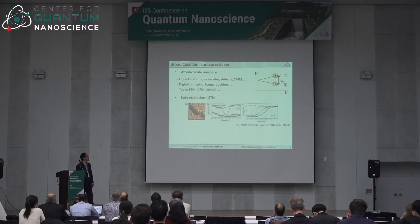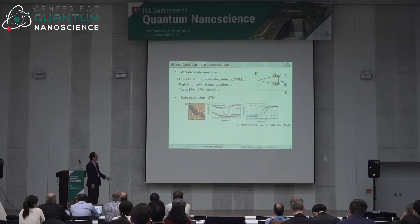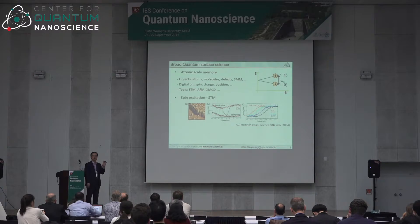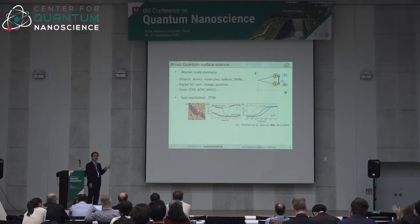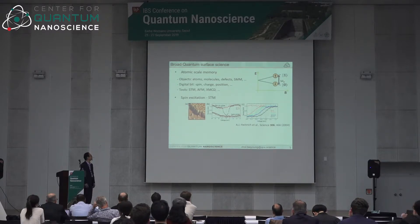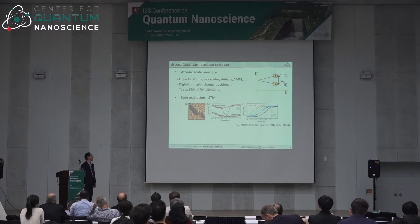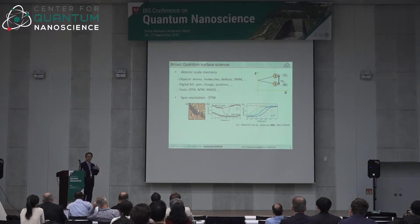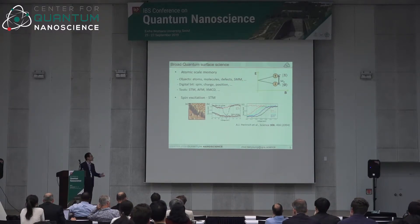One of the first key works was done by IBM Research, led by director Heinrich. They deposited manganese atoms onto aluminum oxide — providing decoupling from conduction electron spin scattering. Applying a magnetic field gives Zeeman splitting, and the plot shows spin excitation response as a function of magnetic field. This is one of the first spin inelastic tunneling spectroscopy measurements: there's a step-like increase in conductance due to the opening of inelastic channels after specific spin excitation energy.